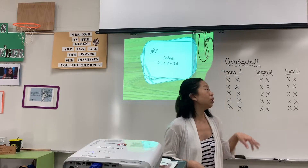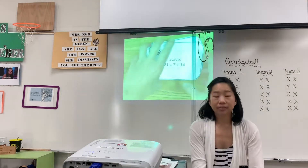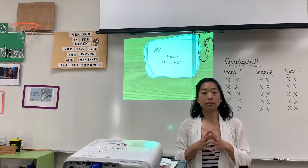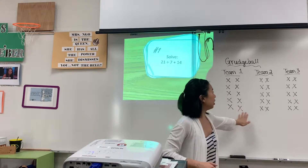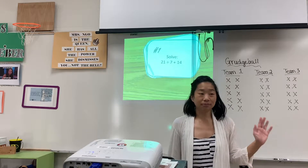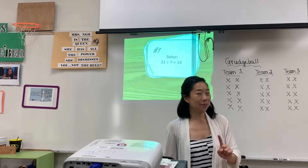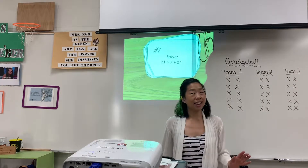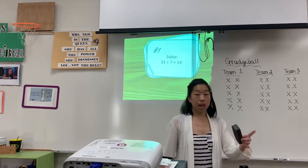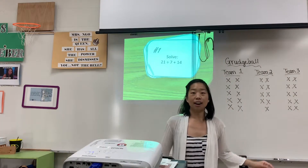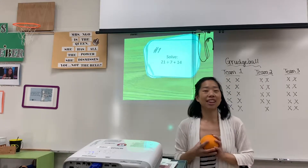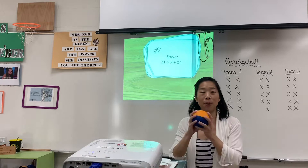The way it works is: we start with team one and team one gets a question. If team one gets it right, they can pick one player from their team to come up to the board and erase the life of someone else's team. Every team starts off with ten lives and you are not allowed to commit suicide — so you're not allowed to erase an X from your own team, you must pick someone else's. Someone from team one will come up to the board and erase the life of another team, then go to the shooting spot in the classroom and shoot the ball into the basket.